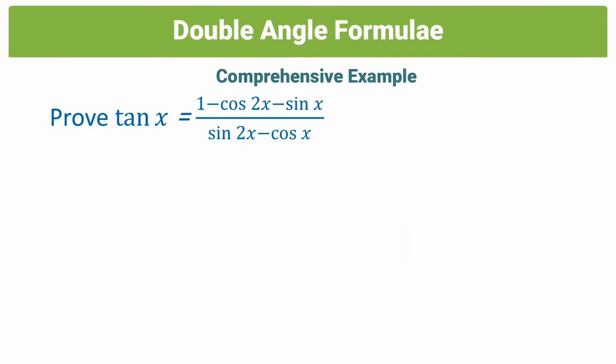For our first example, we're told to prove that tan x equals 1 minus cos 2x minus sin x, all over sin 2x minus cos x. The question is asking us to prove that the left-hand side equals the right-hand side. In these types of questions, you can only work with one side of the equation at a time — you have to specify which side. In this case, we'll be working with the right-hand side because it's the most complicated side and the one we'll be able to simplify.